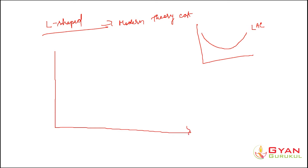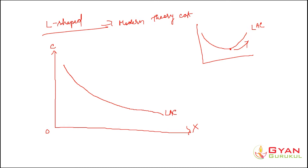This is the output axis and this is the cost axis. The long run average cost curve in the modern theory would go like this — it keeps falling. In the conventional theory, after reaching the optimal minimum point, the average cost increases further. But here the average cost keeps falling as the producer increases the firm size in the long run, which is why we see an L-shaped curve that never increases.